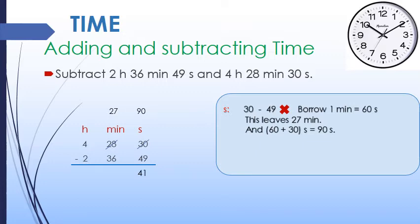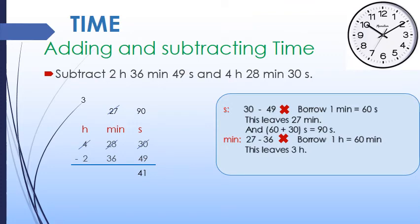Now let's move to the minute column. We have 27 minutes and need to subtract 36 minutes, which is not possible. So we borrow 1 hour from the hour column, changing it to 60 minutes. This leaves 3 hours in the hour column. In the minute column, we add 60 minutes and 27 minutes to get 87 minutes, then subtract 36 minutes from 87 minutes, giving us 51 minutes.